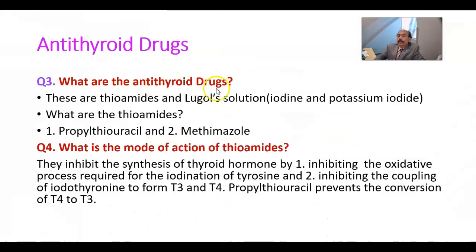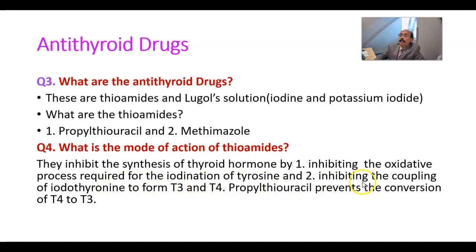What are the antithyroid drugs? These are thioamides and Lugol's solution. Lugol's solution contains iodine and potassium iodide. The thioamides are propylthiouracil and methimazole. Their mode of action is to inhibit the synthesis of thyroid hormone by inhibiting the oxidative process required for iodination of tyrosine and by inhibiting the coupling of iodothyronines to form T3 and T4. Propylthiouracil also prevents the conversion of T4 to T3 at the periphery.